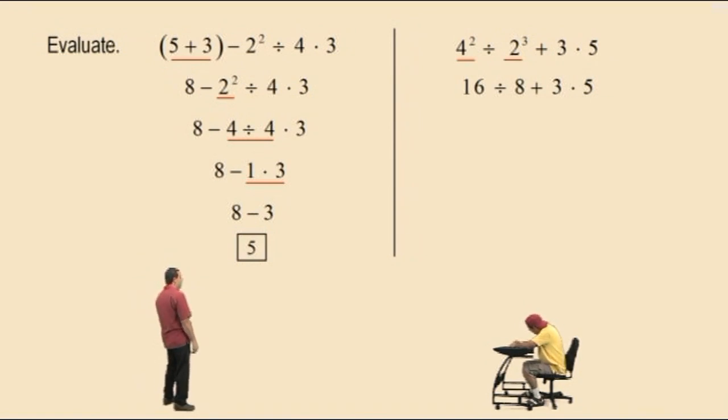Now, what comes next, Charlie? Division. That's right. The division. So, 16 divided by 8 is? 2. 2. That's right. So, we have, bring down our work. 2 plus 3 times 5. What do we do first? The addition or the multiplication?